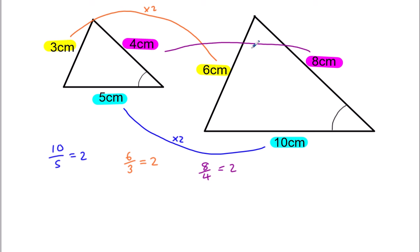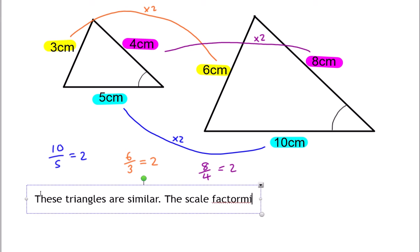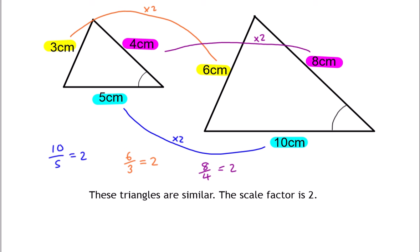Now if it had gone two, two, three, that wouldn't be similar and they wouldn't look like each other. So what we can say is these triangles are similar — the scale factor is 2. You can multiply or divide; if I'd done it the other way around it would be dividing by 2. Find your matching sides, divide one by the other, and you should get the scale factor. If they're all the same, you've proved the triangles are similar.